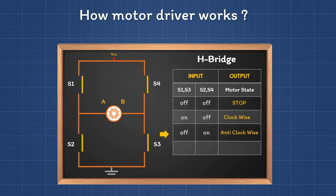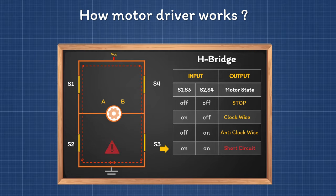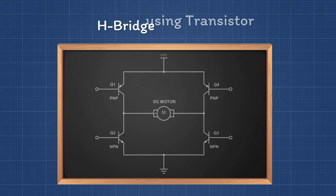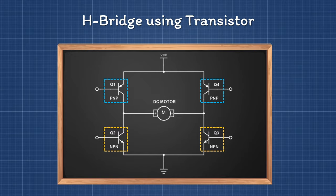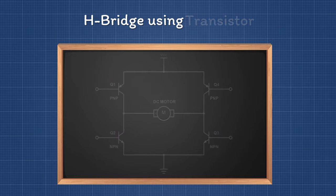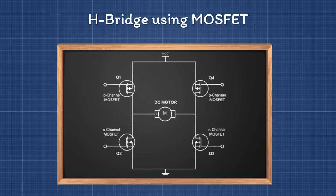If we turn all the switches on simultaneously, current directly flows from VCC to ground, creating a short circuit — the driver may also be damaged in this situation. In actual motor drivers, transistors are used instead of switches. A basic transistor-based motor driver uses 2 NPN and 2 PNP transistors. However, transistors are quite inefficient, so MOSFETs have been used as replacements — using 2 N-channel and 2 P-channel MOSFETs in place of NPN and PNP transistors.